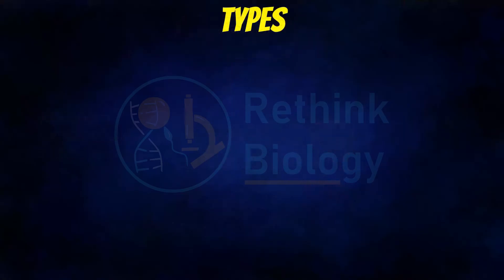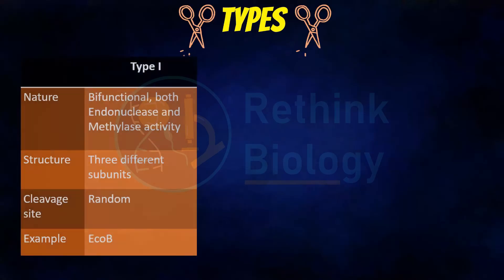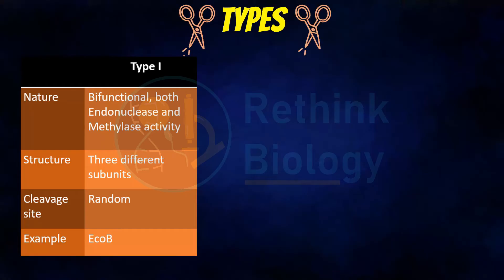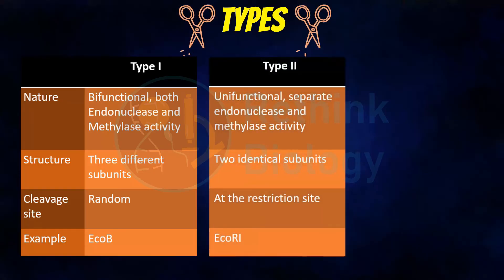Based on this system, restriction enzymes can be divided into three types. In the case of Type I restriction enzymes, the enzyme is bifunctional with both endonuclease and methylase activity. The enzyme has three different subunits. The cleavage site of Type I restriction enzymes is random. An example is EcoB.